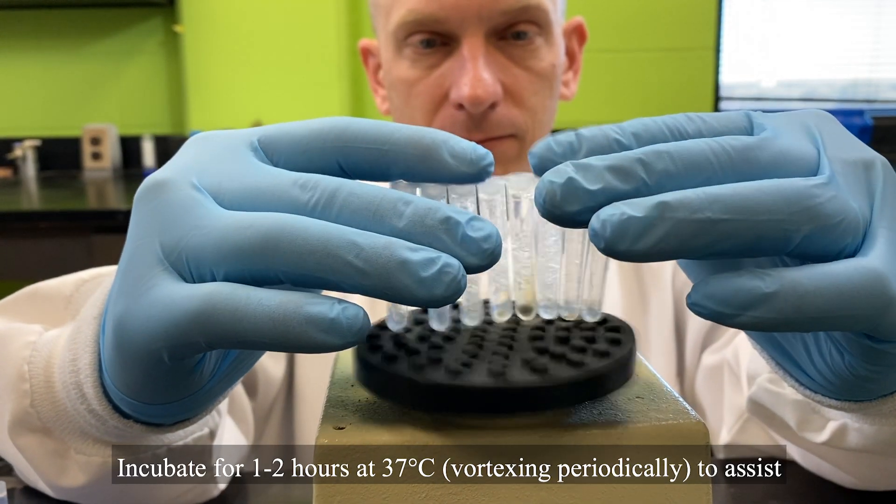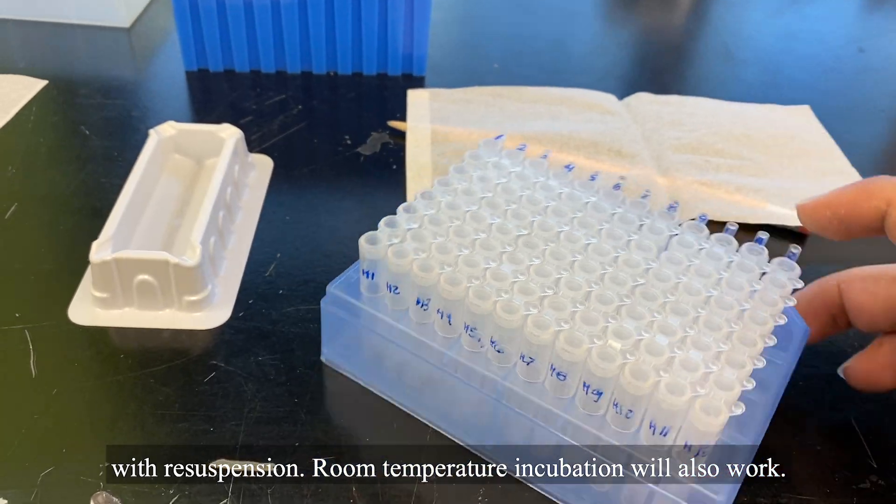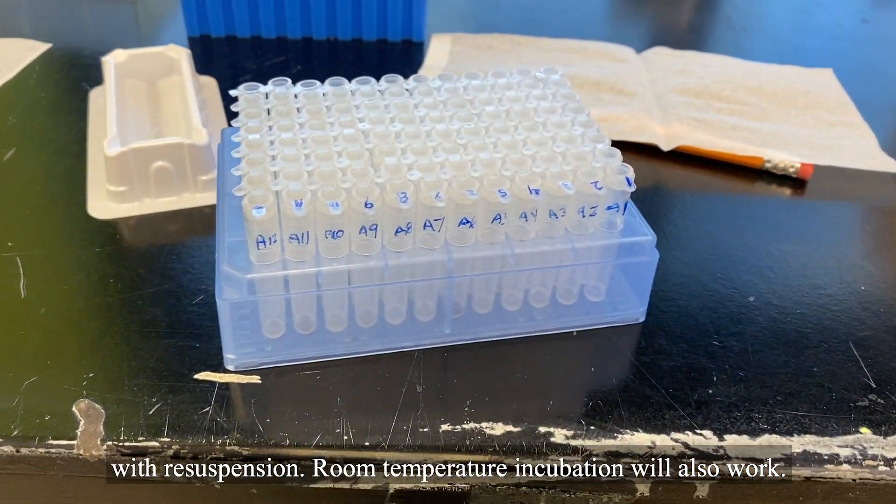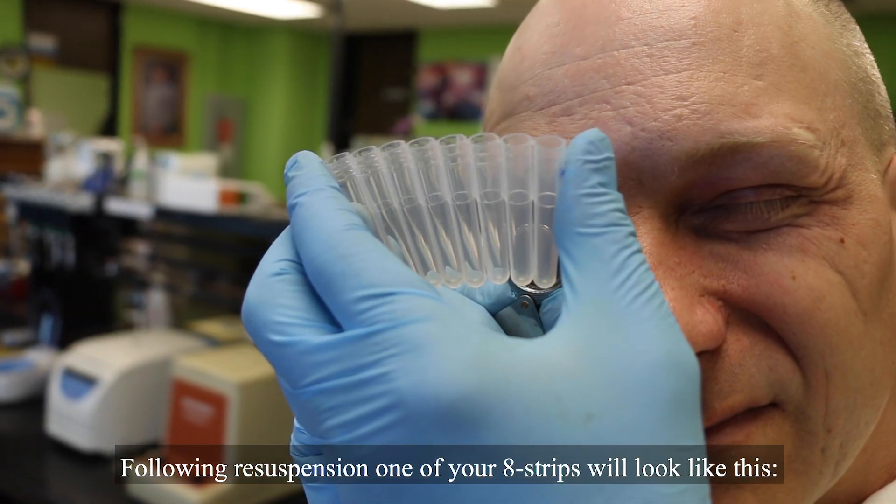Incubate for 1 to 2 hours at 37 degrees Celsius, vortexing periodically, to assist with resuspension. Room temperature incubation will also work. Following resuspension, one of your H strips will look like this.